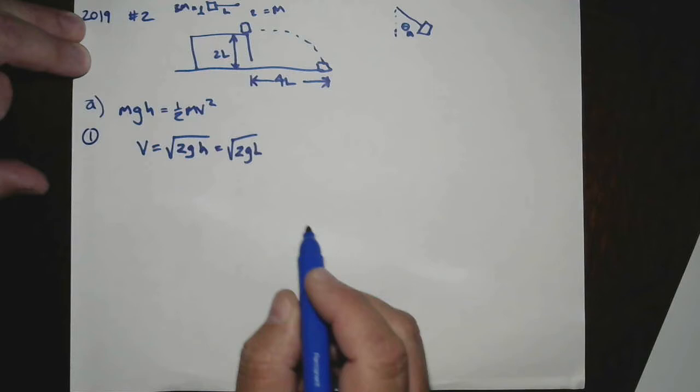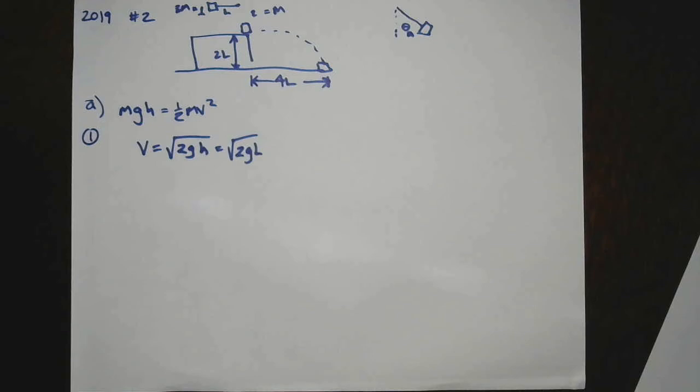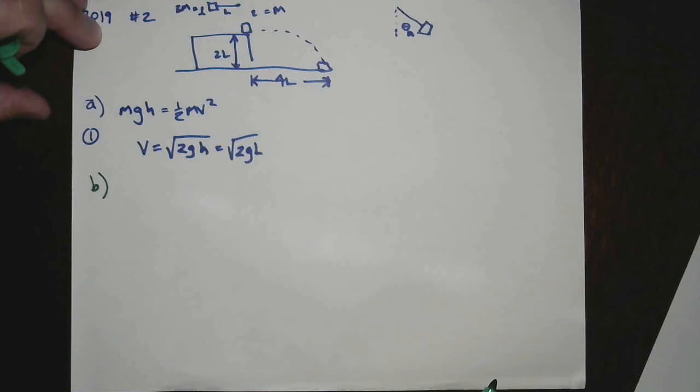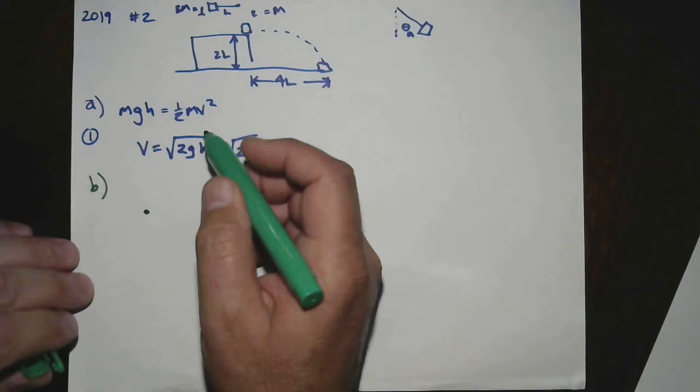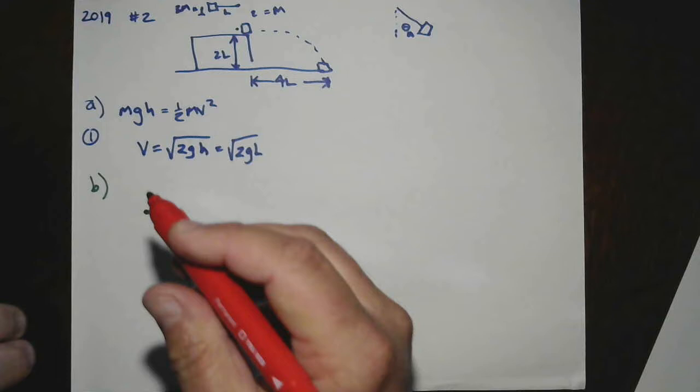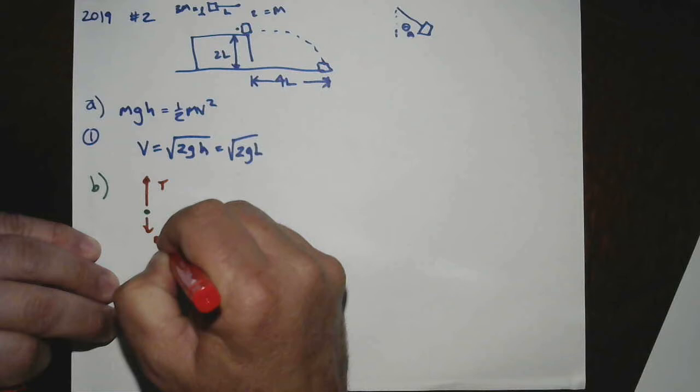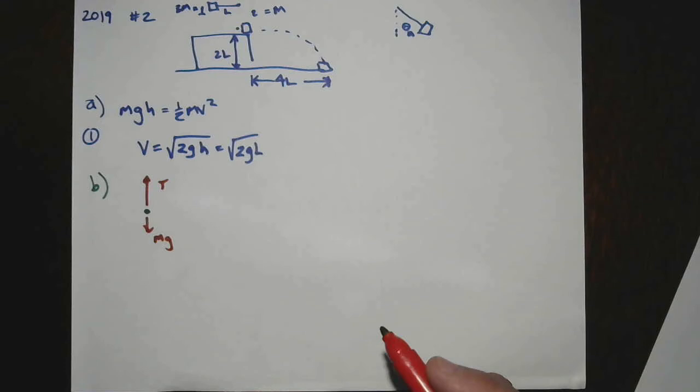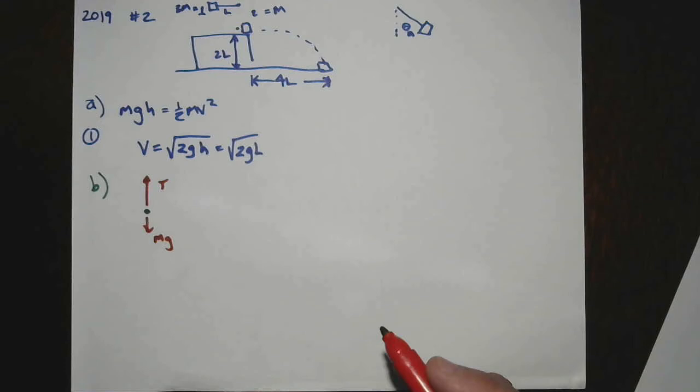This is only worth one point for some reason. Okay, on the dot below, please draw and label the forces, not the components, that act on block number one, just before it makes contact with block number two. So block number one, as it's about to make contact right here, it's going to be in the midst of swinging, which means there's going to be some tension force and there's going to be some weight. And I have drawn the tension force being larger than the weight. So there are two points for this. One is for the correct forces and one is for showing the tension force is larger than the weight.